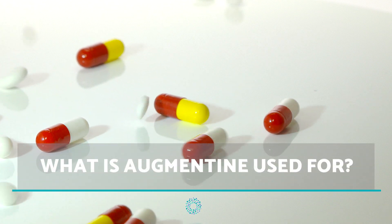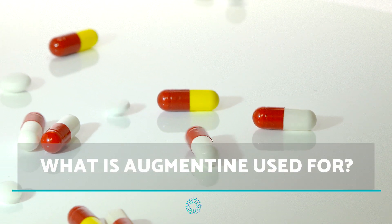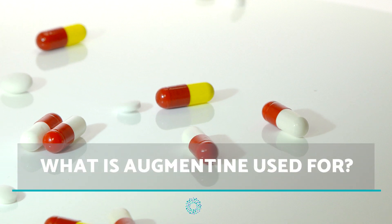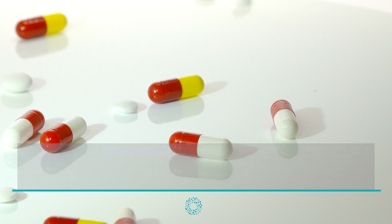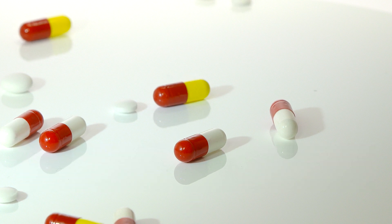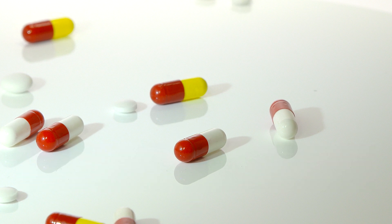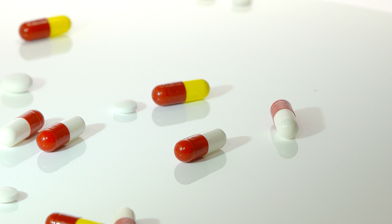Augmentin is commonly used for the following infections: respiratory infections, otitis, sinusitis, cystitis, cellulitis, prevention of anthrax infection after exposure to the disease, and chlamydia during pregnancy.